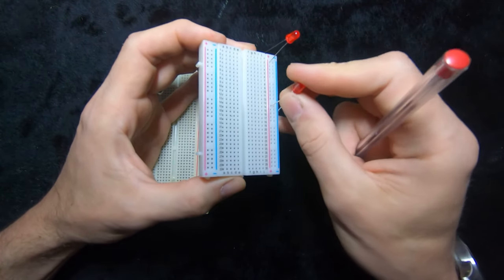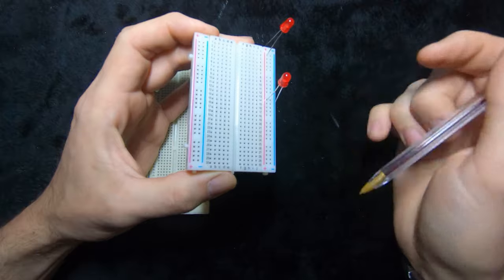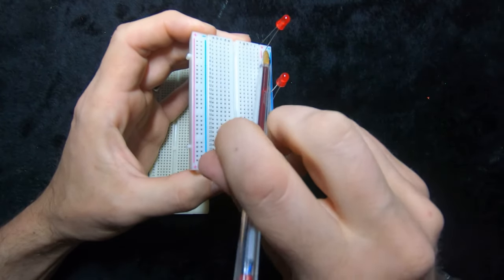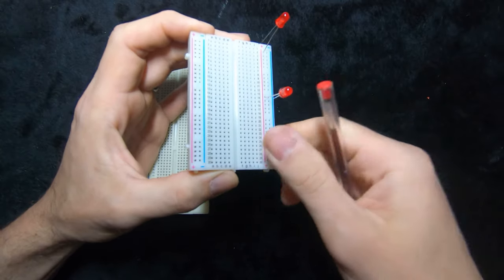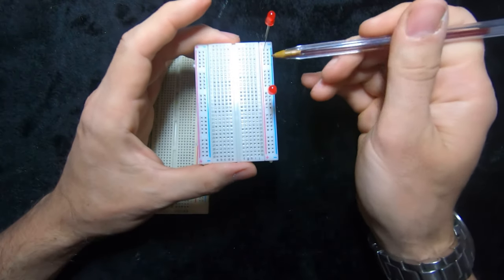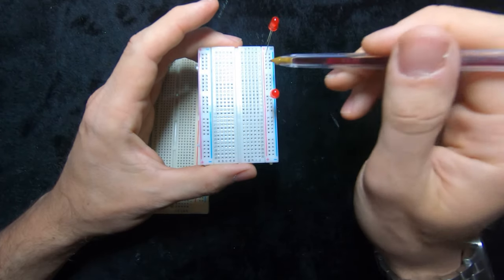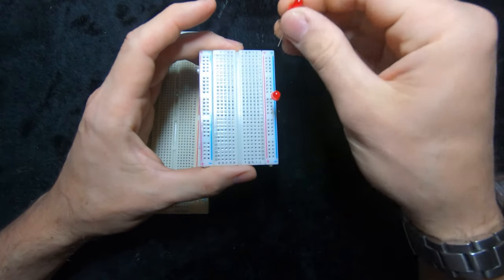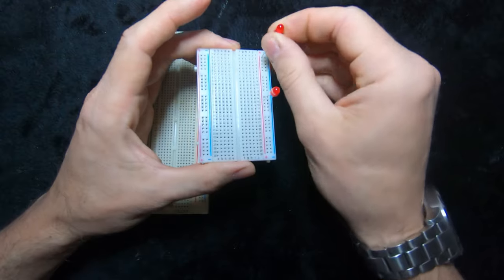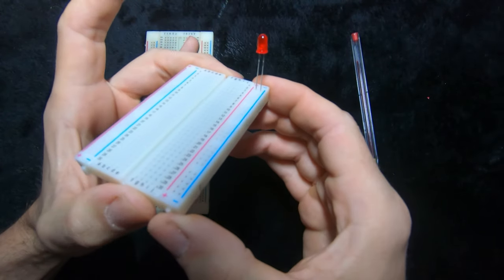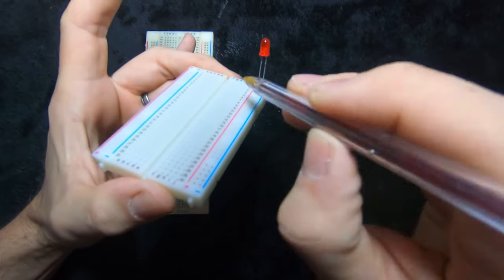If I move the LED anywhere along that line and plug it into the holes next to the red line, I've connected those two together. Just imagine that this is a wire down here. Now importantly, the holes next to the red line and the holes next to the blue line are not connected together. So if I take my LED and put it across those holes there, they are not connected.